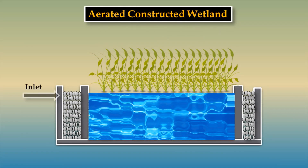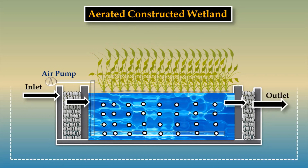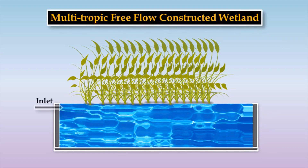In the Aerated Constructed Wetland, to fulfill the oxygen requirement, aeration is done inside the wetland bed. Multi-Tropic Free Flow Engineered Wetland consists of wastewater in a tank in which floating aquatic plants grow.